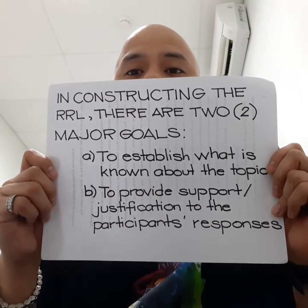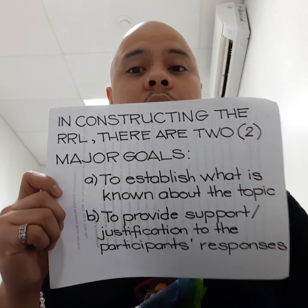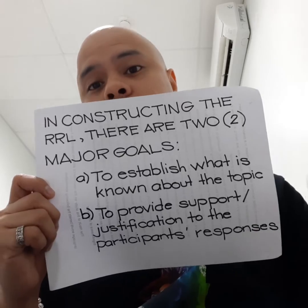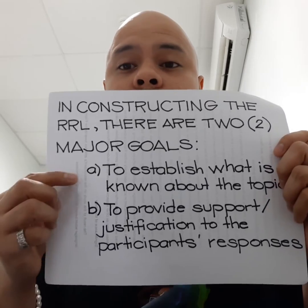Now that we have answered the what and the initial how, it's time to answer the why. Why do we write the review of related literature? We write the review of related literature for two main purposes or two main goals.